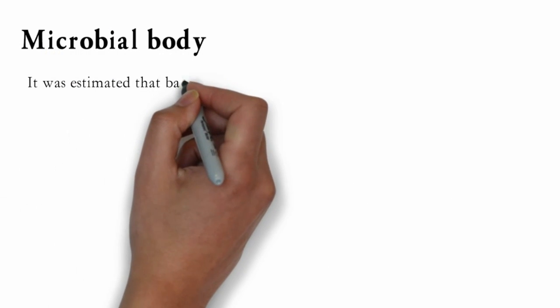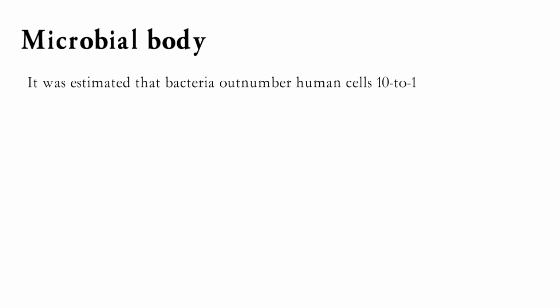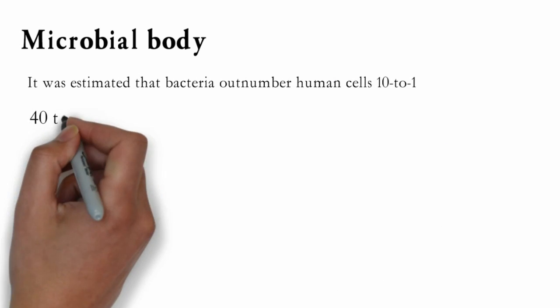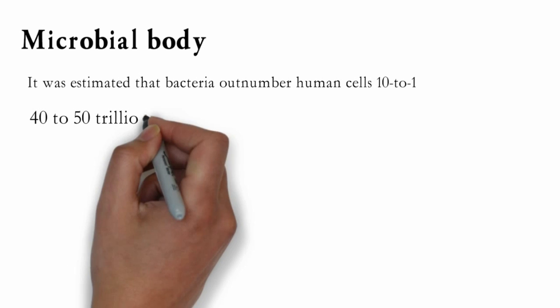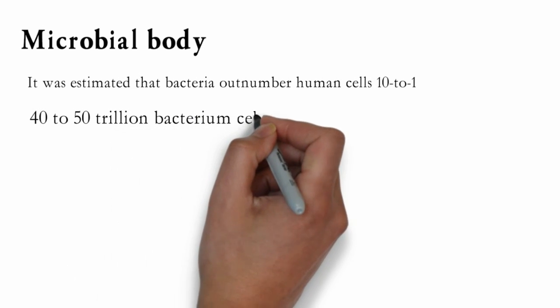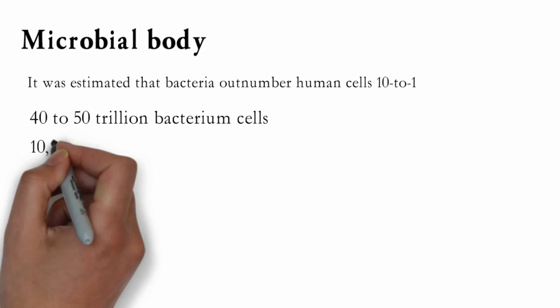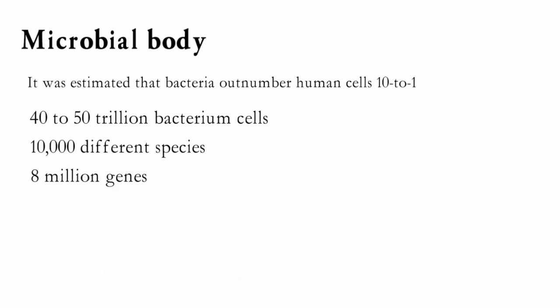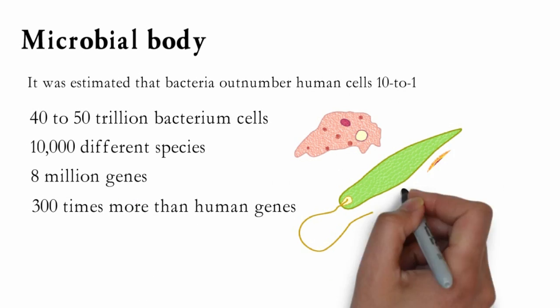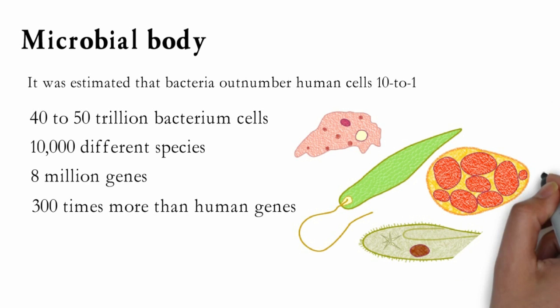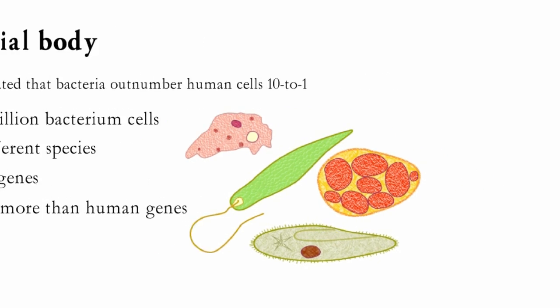Microbial Body. Until recently it was estimated that bacteria outnumber human cells 10 to 1. Apart from 30 to 40 trillion cells, human body also contains about 40 to 50 trillion bacterium cells of 10,000 different species with 8 million genes, which are about 300 times more than human genes. This suggests that human body is a remarkable giant organism consisting of trillions of human and bacterium cells.